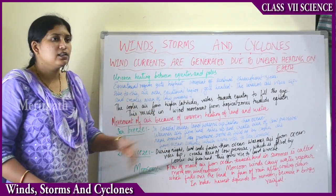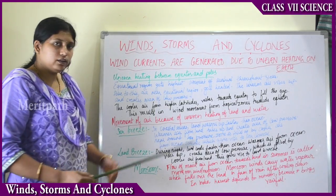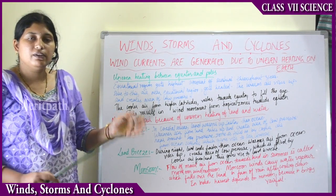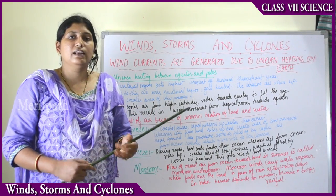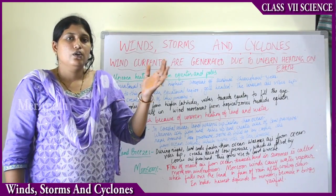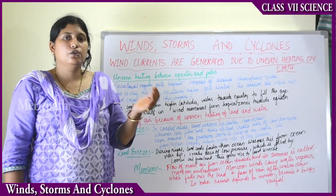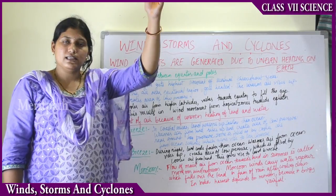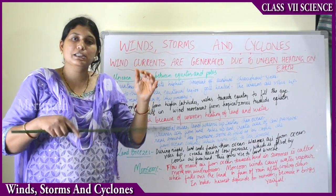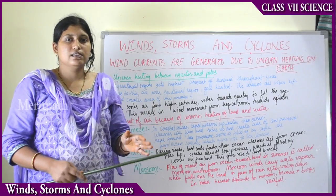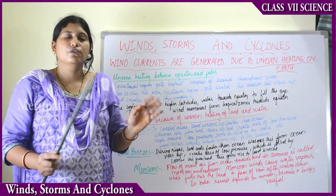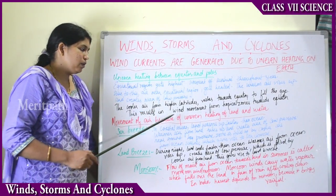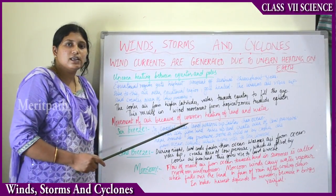Due to Earth's rotation, the direction of wind always changes. The equator receives the highest amount of sunshine, so the land is always heated up. As warmer air rises, empty space is left, which is filled by cooler air from tropical surroundings, resulting in continuous wind movement from tropical zones toward the equator.